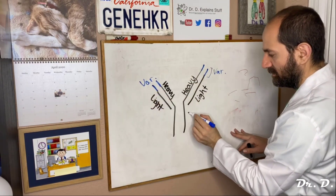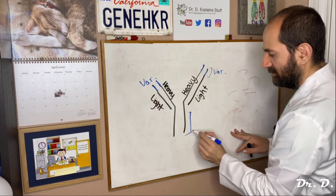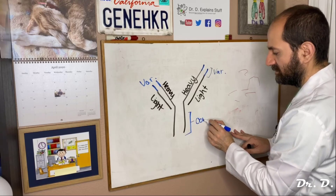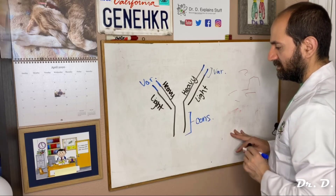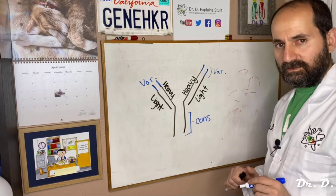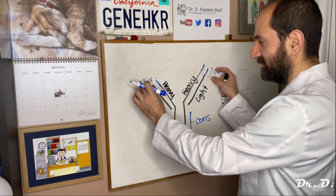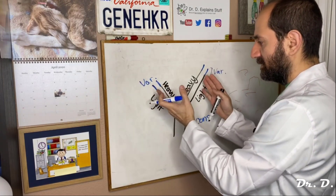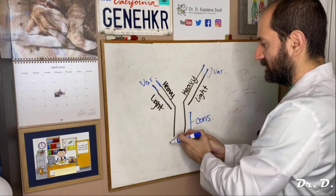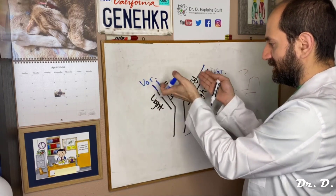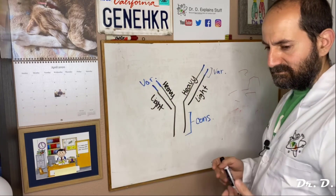And the stem here is called the constant region. So you've got the constant region, the variable region, light chains and heavy chain.